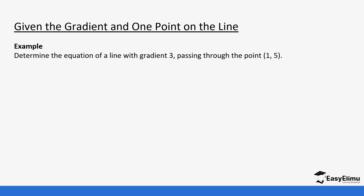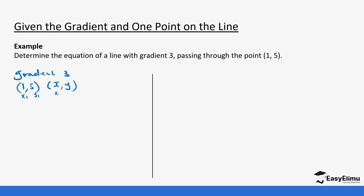Sometimes you are given only one point and a gradient. This is similar to the second part of our previous calculation. We have gradient equal to 3 and one point (1, 5). We introduce another unknown point (x, y) and calculate the gradient as change in y over change in x. So (1, 5) gives us x1, y1 and (x, y) gives x2, y2. Change in y is y minus 5, change in x is x minus 1, and we have gradient equals 3.